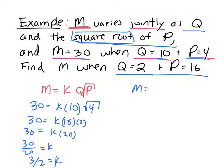So if I were to write my relationship now, I have M equals 3 halves times Q times the square root of P. So let's find M when Q equals 2 and P equals 16.